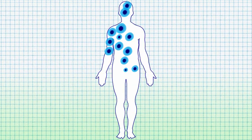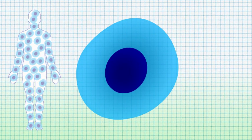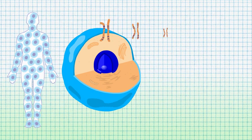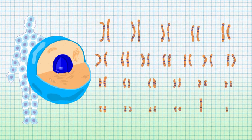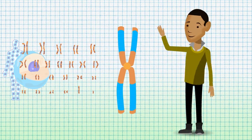Human beings are made up of millions of cells. Inside every cell lies a nucleus which holds 46 chromosomes. Our chromosomes carry genes which make us into human beings.